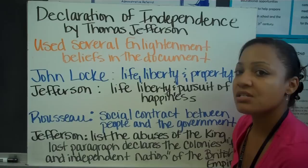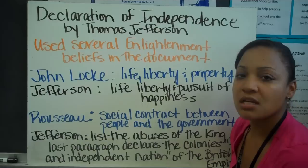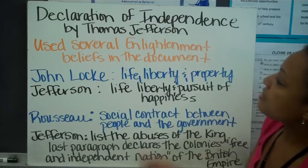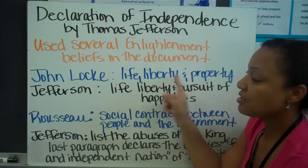July 2, 1776 is when the Declaration of Independence was finalized, but we celebrate July 4, 1776 because that's when it was read across the world — that England's 13 colonies were breaking away. The Declaration of Independence is meant to be read aloud to express the colonists' ideals on why they wanted to break away from England. It was written by Thomas Jefferson, who used several Enlightenment beliefs in the document.